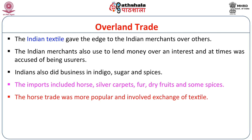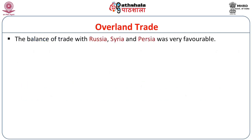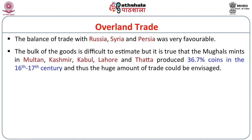The imports included horses, silver, carpets, fur, dry fruits and some spices. India happened to be the largest consumer of silver at that point of time, because the Mughal currency depended on the supply of silver. The balance of trade with Russia, Syria and Persia was also very favorable. Mughal mints in Multan, Kashmir, Kabul, Lahore and Thatta produced at most 36.7% of coinage in the 16th–17th century, and thus the huge amount of trade could be envisaged.